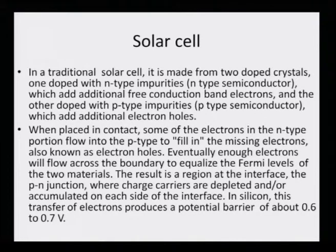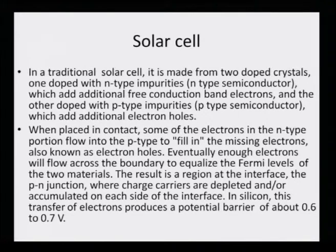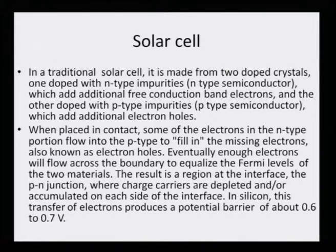In a traditional solar cell it is made from two doped crystals: one doped with n-type impurities — the n-type semiconductor — which adds additional free conduction band electrons, and the other doped with p-type impurities — the p-type semiconductor — which adds additional electron holes. When placed in contact, some of the electrons in the n-type portion flow into the p-type to fill in the missing electrons, also known as electron holes.